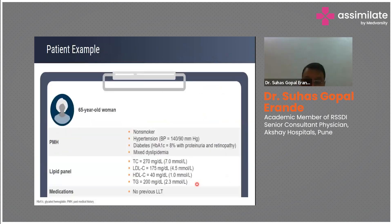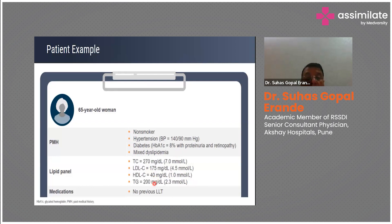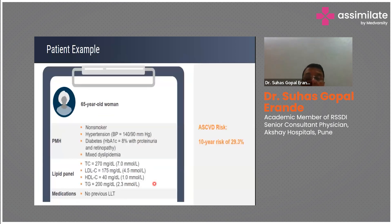A case example: a postmenopausal lady, non-smoker, hypertensive, long-standing diabetes with HbA1c of 8%, proteinuria and retinopathy — so microvascular complications are already present. She has mixed dyslipidemia: total cholesterol 270, LDL 175, HDL 40, triglycerides 200, and she is not on any lipid-lowering therapy.